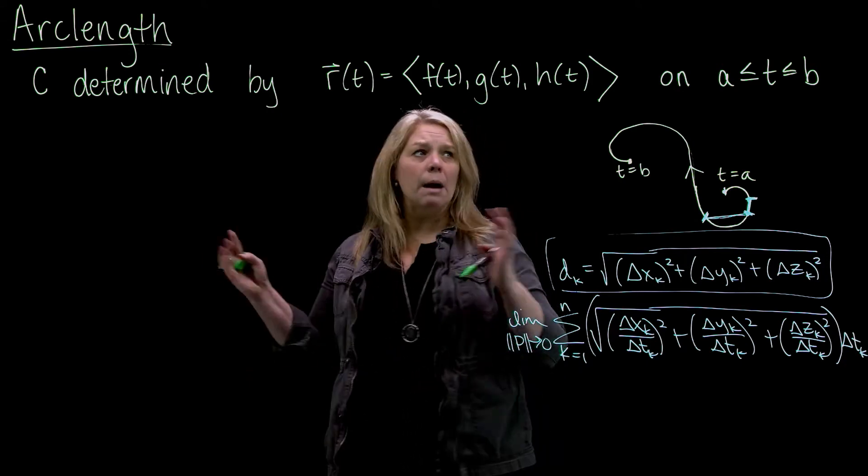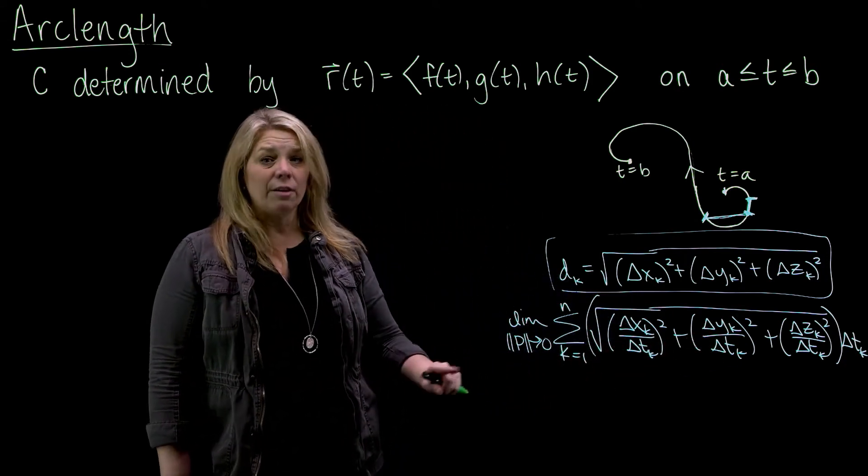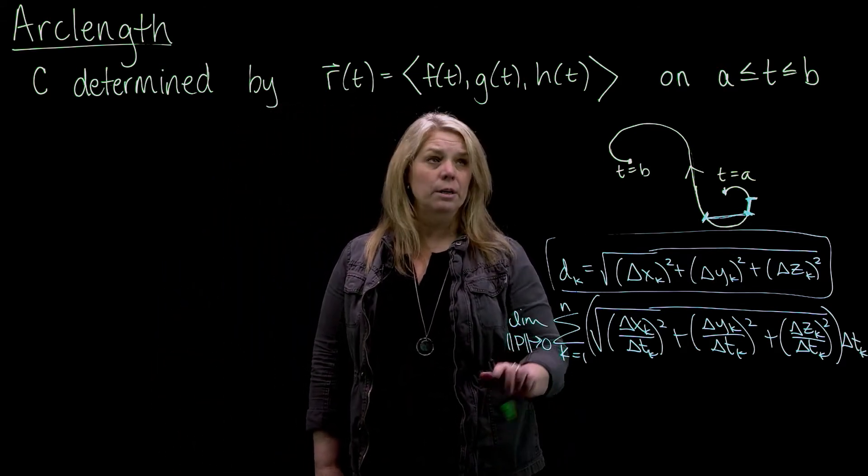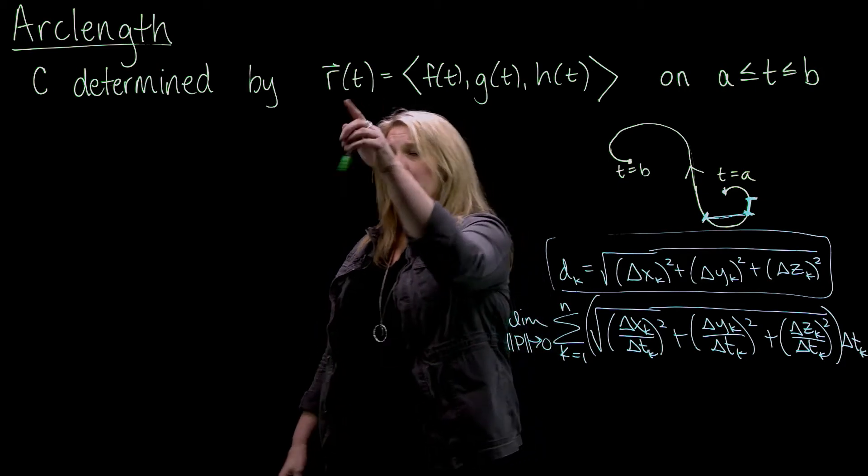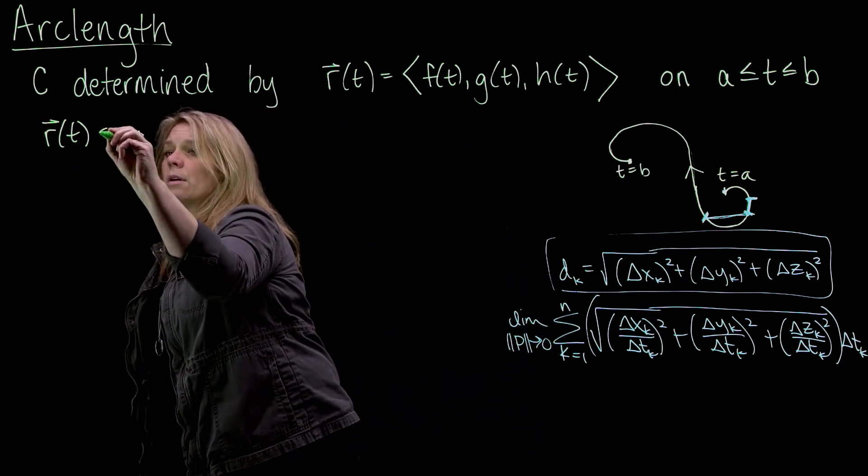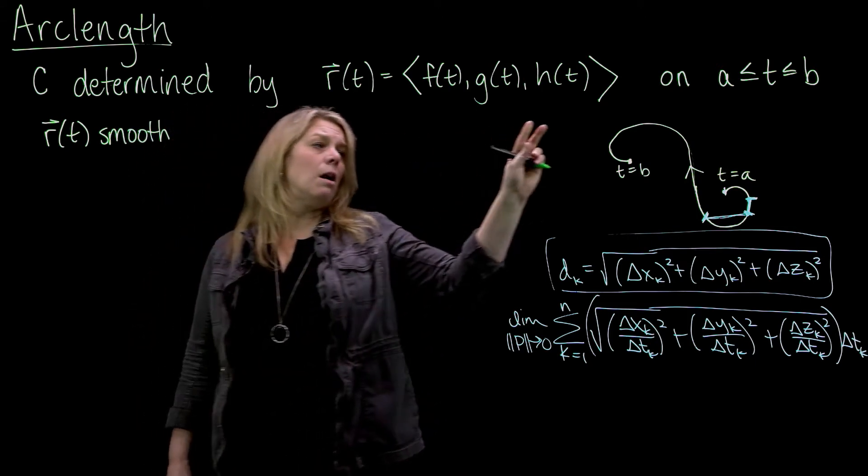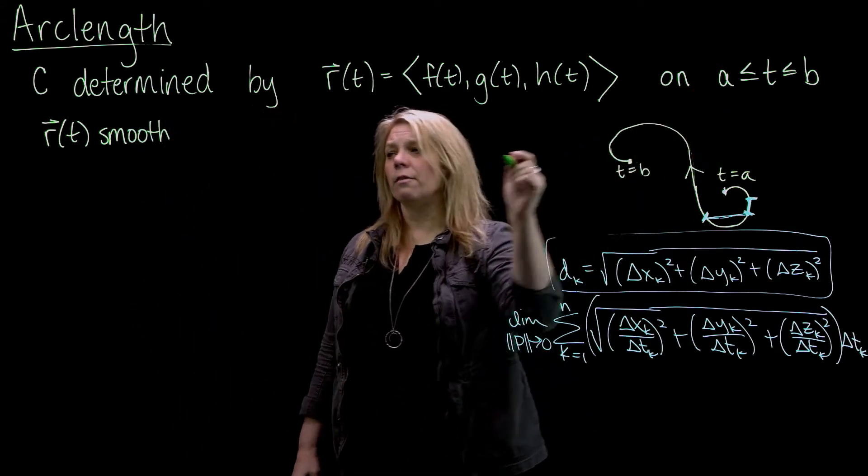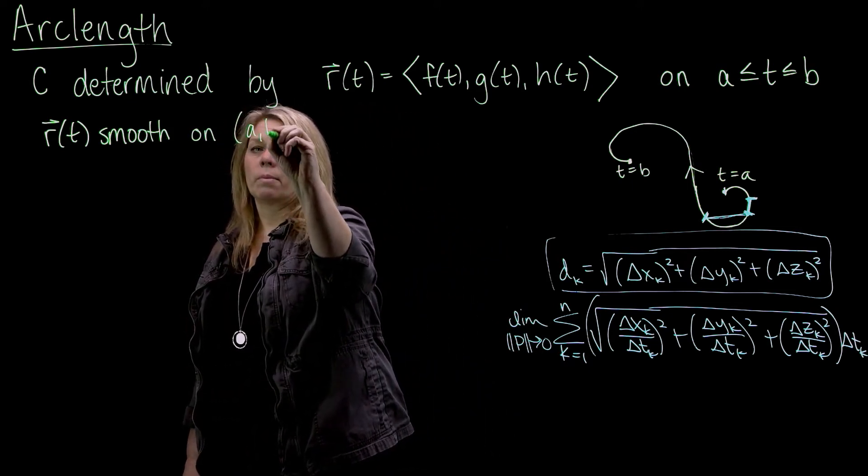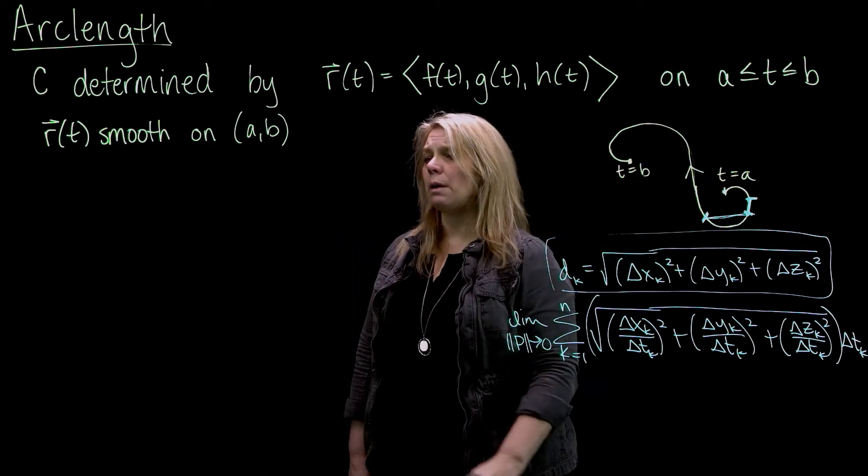There are a couple of conditions I need to ensure that this Riemann sum will converge to an actual limit when I take the limit of that as the norm of that partition approaches zero. I need my r of t parameterization to be smooth at least on the interior of the interval from a to b. It does not necessarily have to be smooth at the endpoints at t equals a and t equals b.